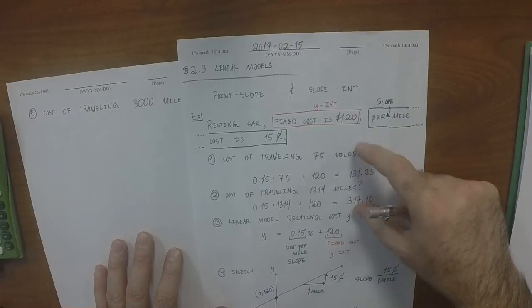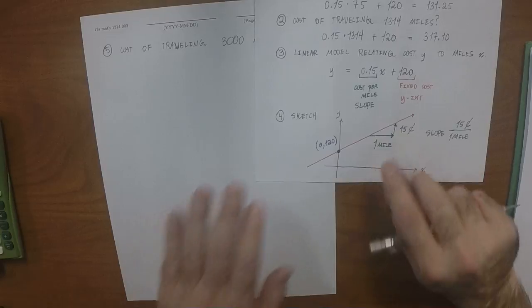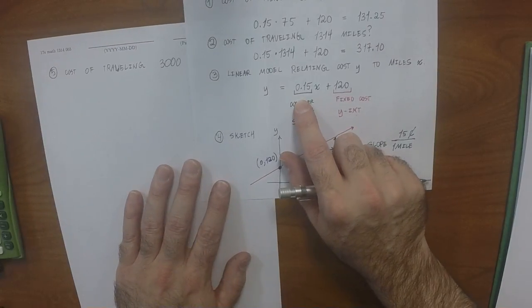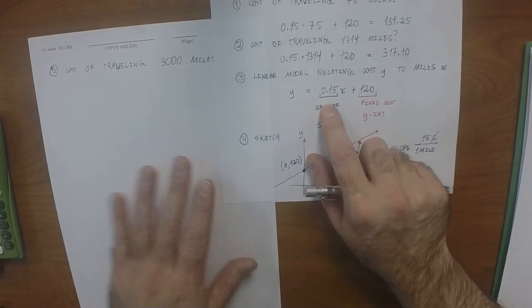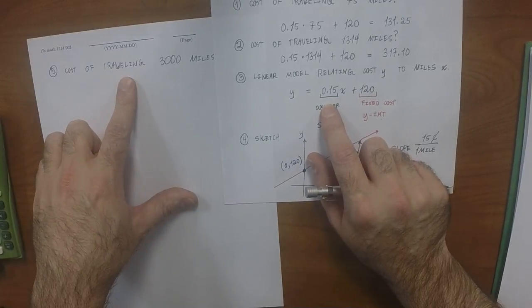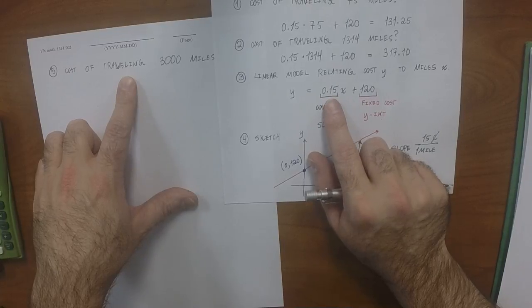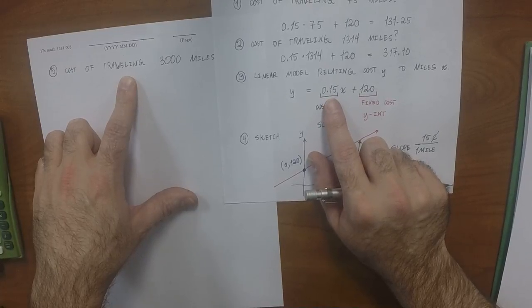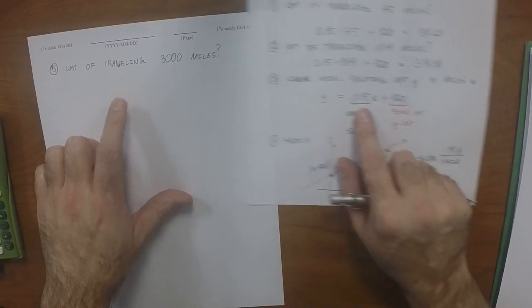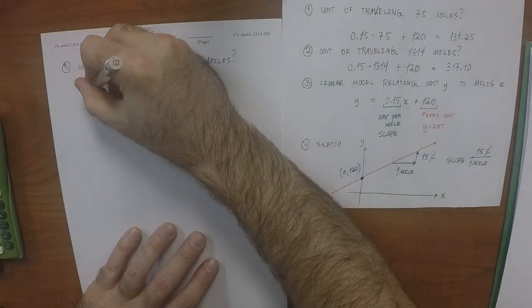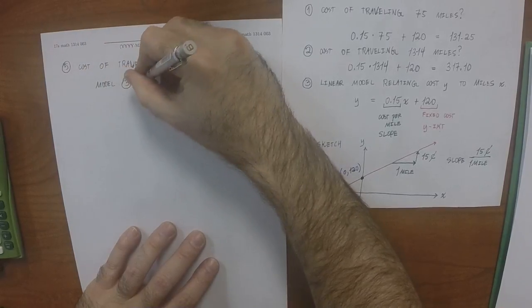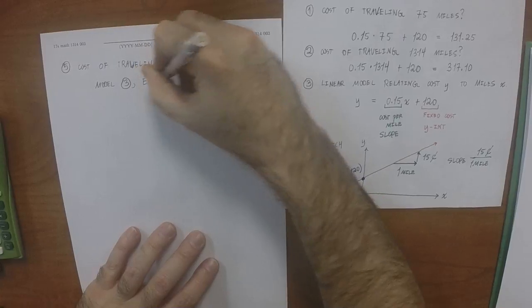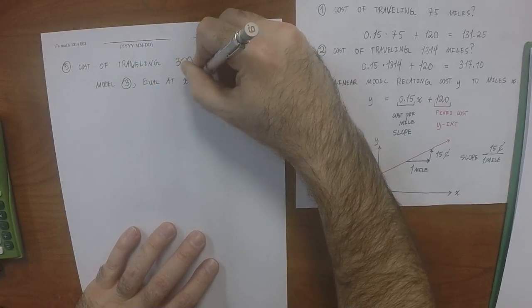Rather, I want you to think of it in terms of this model. Okay, so what am I asking you to do from this prompt with this model? Plug in 3,000 for x. So we're going to take that model and we're going to evaluate that x is 3,000.